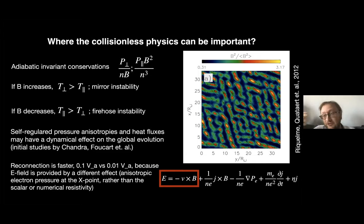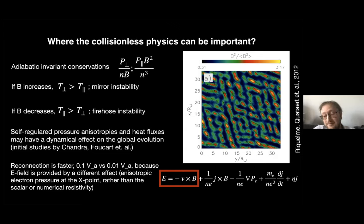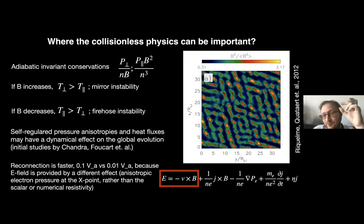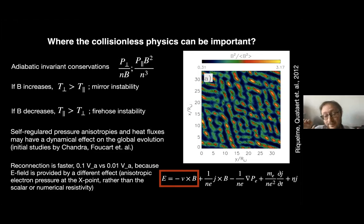A third effect is that reconnection happens differently in collisionless plasma than in ideal or resistive MHD. In resistive MHD or numerical resistivity schemes, the electric field is produced by uniform resistivity everywhere. In collisionless plasma, the Ohm's law shows that the electric field comes from anisotropic pressure of electrons localized at the X point. This is like a resistivity localized to very small regions on kinetic scales at current sheets, and it is known to enhance the reconnection rate. If you take a collisionless plasma simulation, it reconnects roughly ten times faster than the MHD simulation.